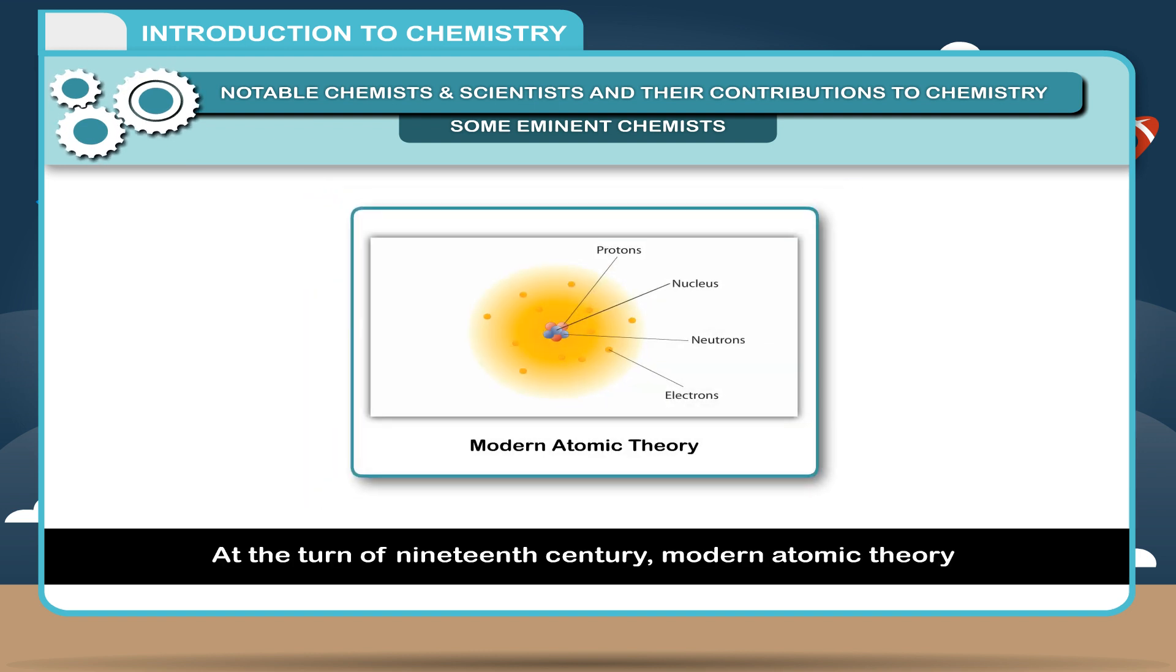1807, John Dalton gave the atomic theory. At the turn of 19th century, modern atomic theory was established.